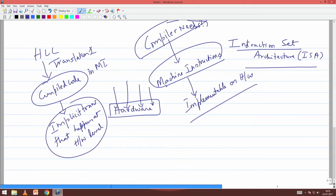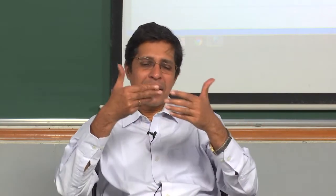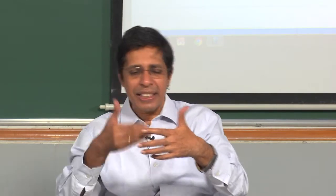So when we look at instructions, there is a translation — what we call compilation — which is explicit. And then there is another translation which we call interpretation, which is implicit. What is compilation? I take a program, compile it end to end, convert it end to end, translate it end to end, and create another executable in the form of the target language. This is called compilation. But then you take a program, take every instruction, execute it, then take the next instruction, execute — this is called interpretation.